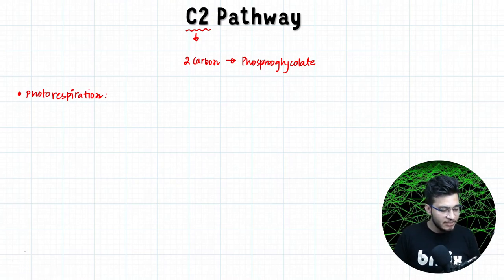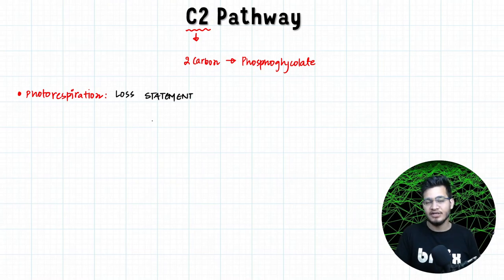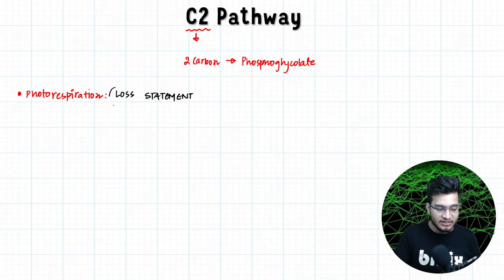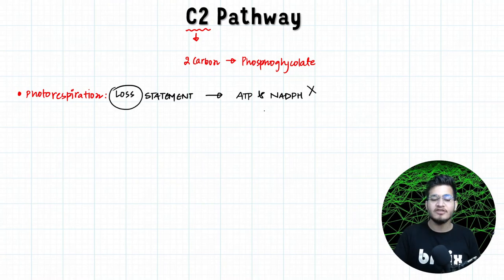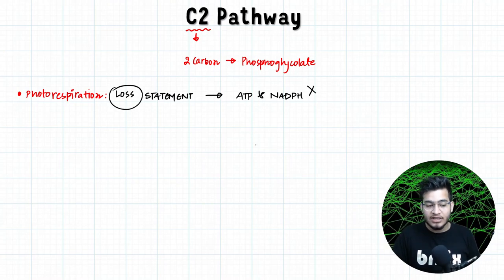Photorespiration is a loss process for a plant — it is considered a loss, and here are some reasons why. In photosynthesis, two things are produced: ATP and NADPH. In photorespiration, neither of these are formed, meaning there is no benefit in terms of energy.